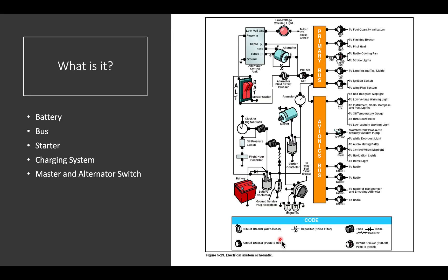We're going to start with what is it. The electrical system of a small general aviation aircraft is typically made up of a battery, which is here. A bus, which are some bars that all of our electrical components are attached to. The starter to turn the engine over when we're trying to start the engine. A charging system. And a master and alternator switch to control the system with.